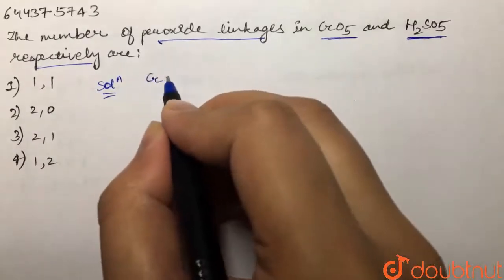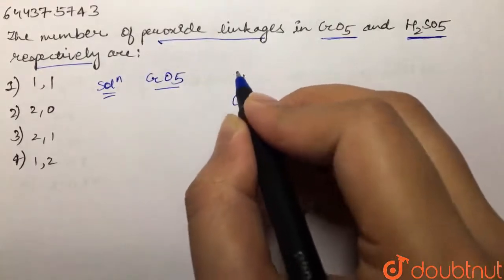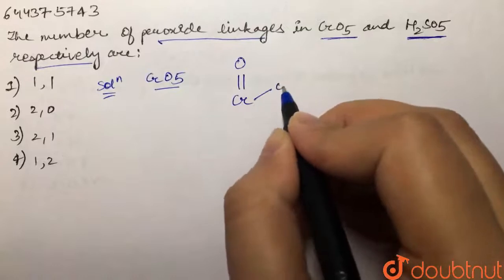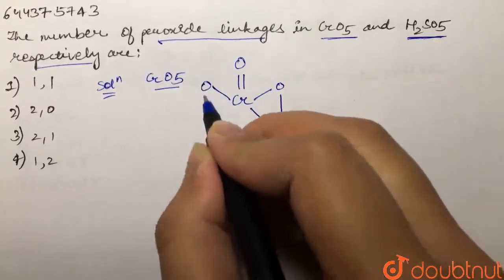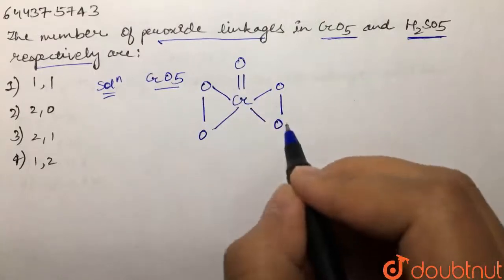So if we take our first case, that is chromium pentoxide. This has a structure like this: we have chromium double bond oxygen, and then we have oxygen single bond oxygen over here and over here as well. So this becomes our chromium pentoxide.